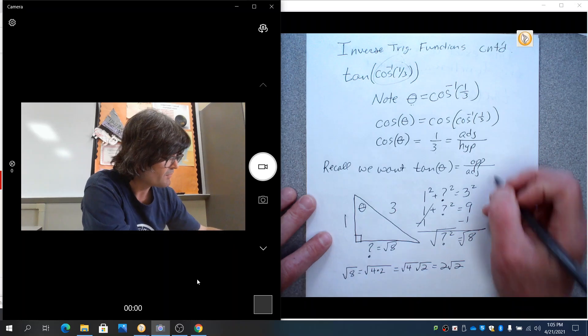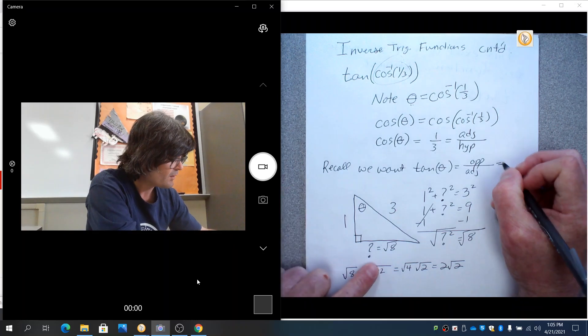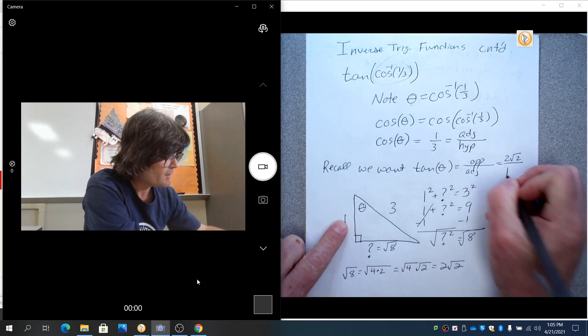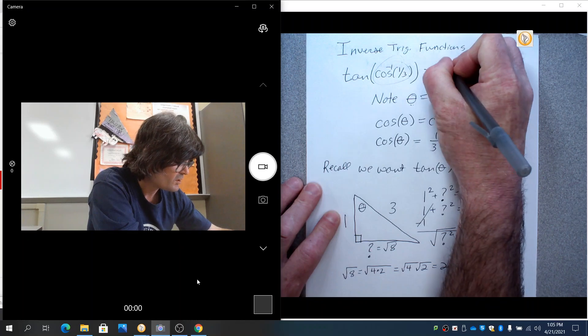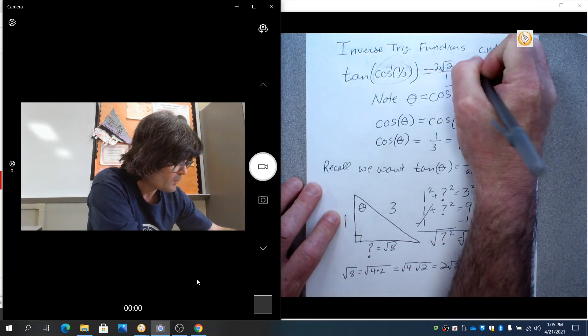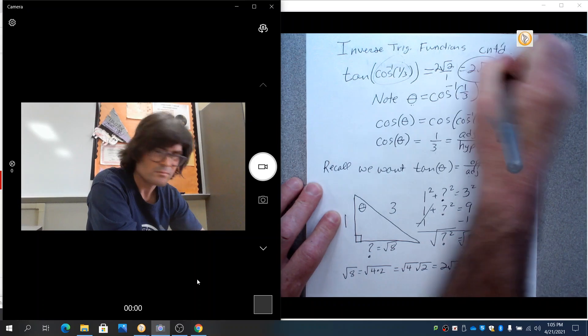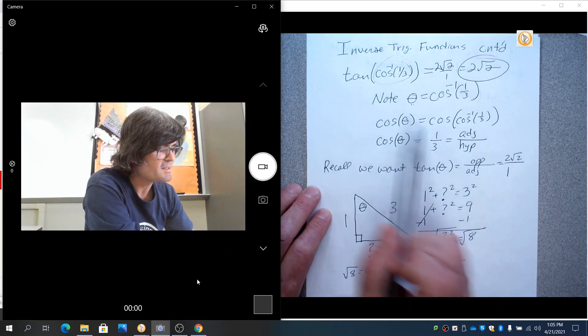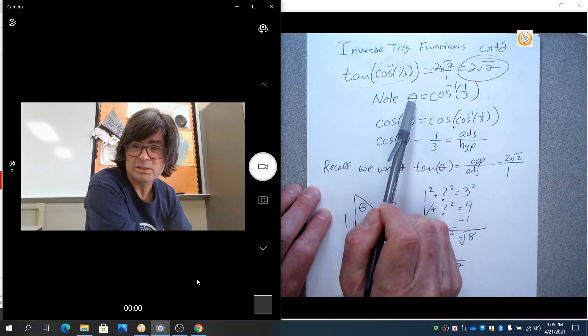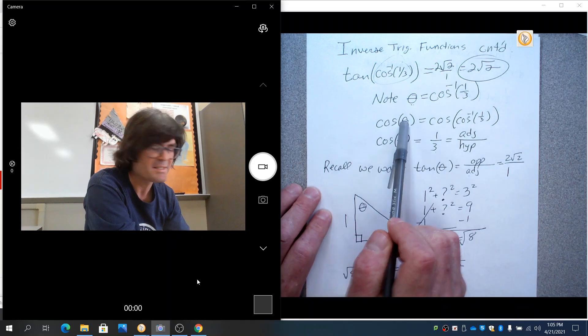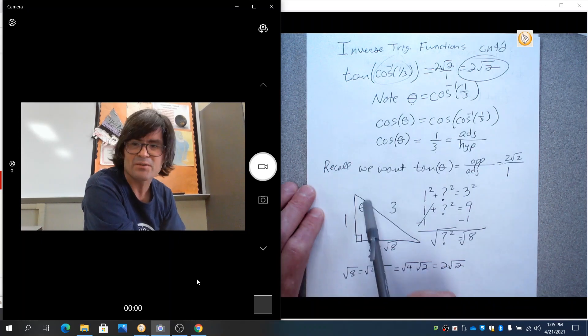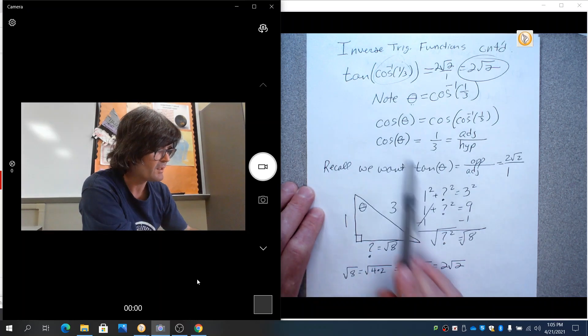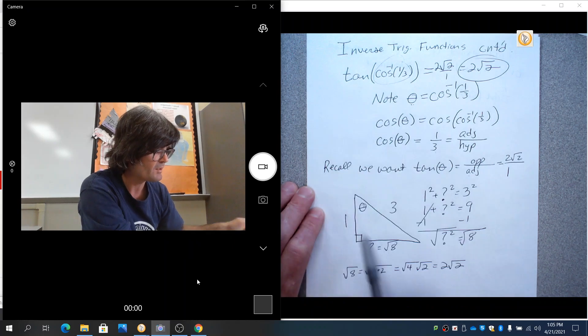So really, we need opposite two roots of two over adjacent, which is one. And so this is now just two roots of two over one, or you could just say two roots of two. So let's try another one, kind of practice this again. The key here, notice that this is an angle. Just call it an angle. Rewrite it as cosine of an angle and cancel out the inverse, because I don't have any inverse there. And then draw yourself a triangle. Use what you have and get what you want. And then tangent of that angle for us was opposite over adjacent.